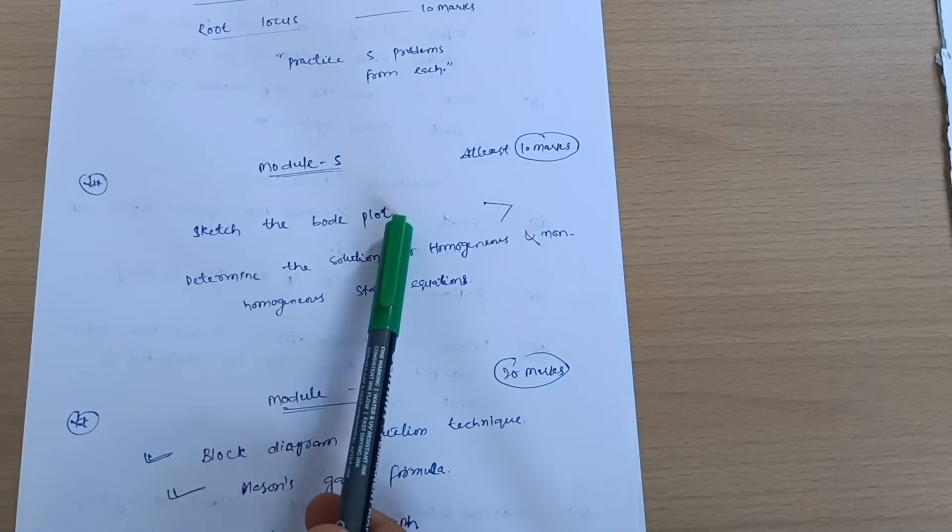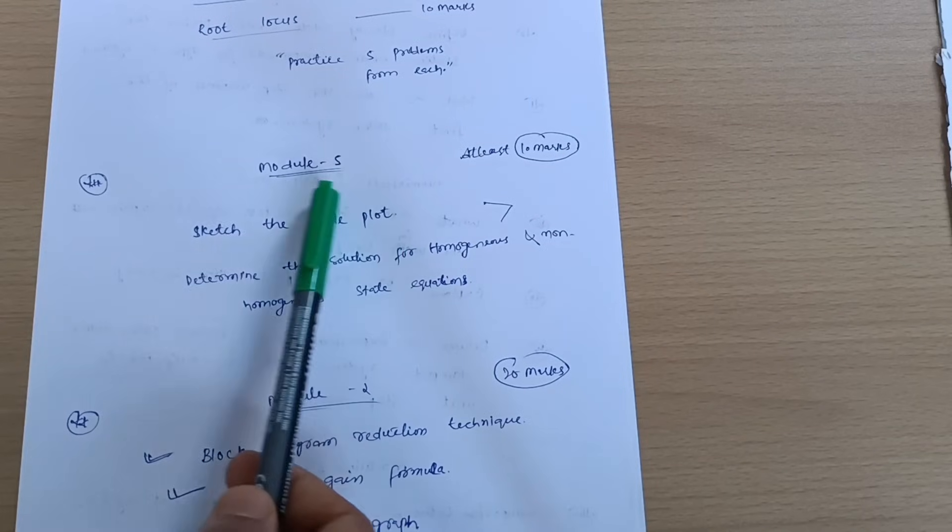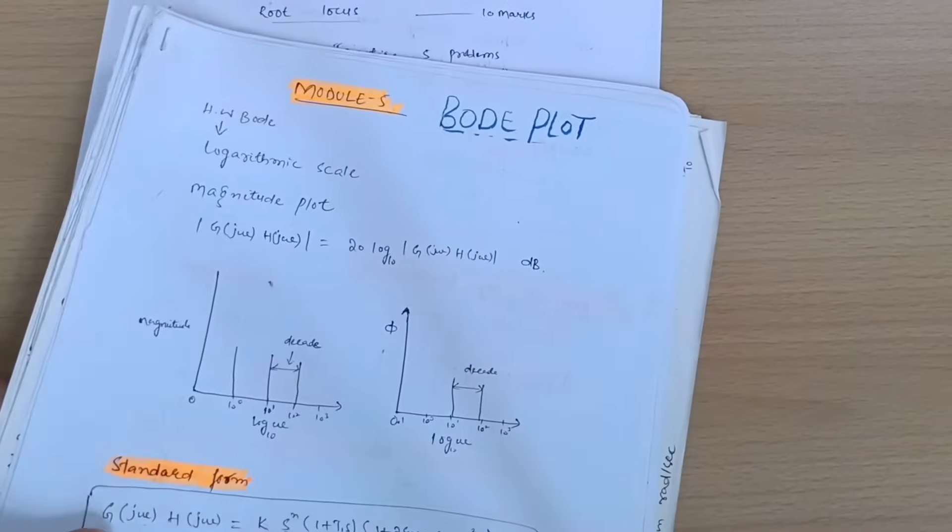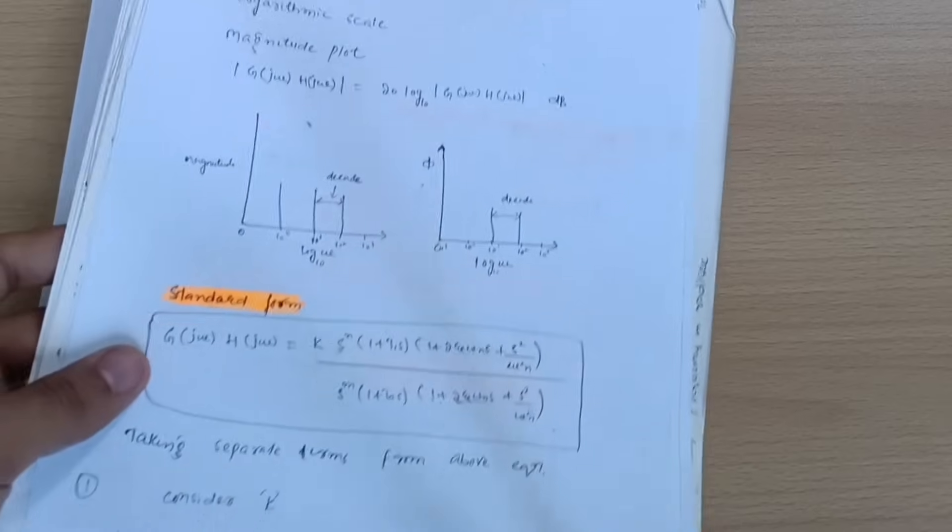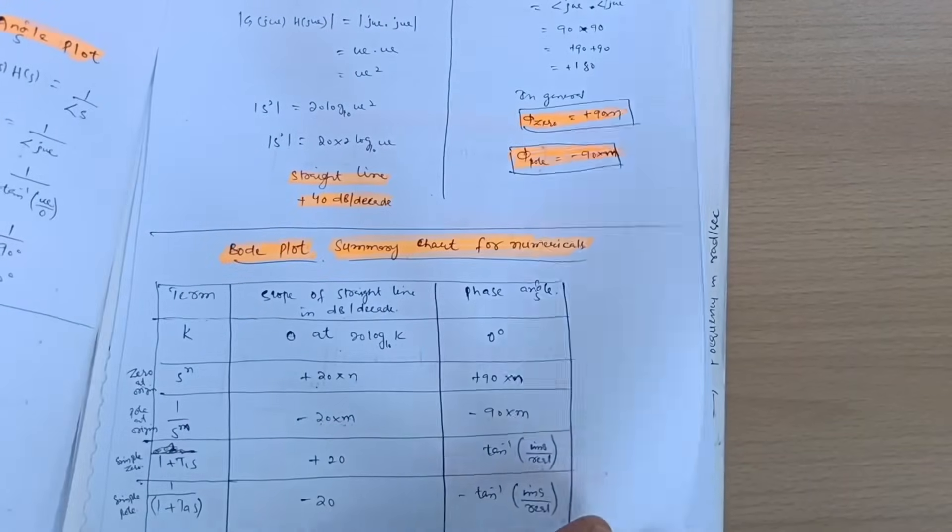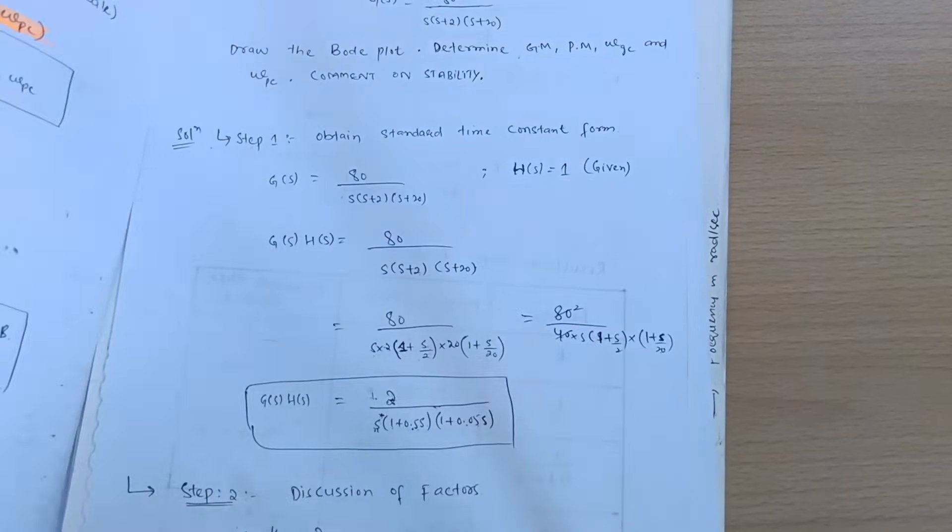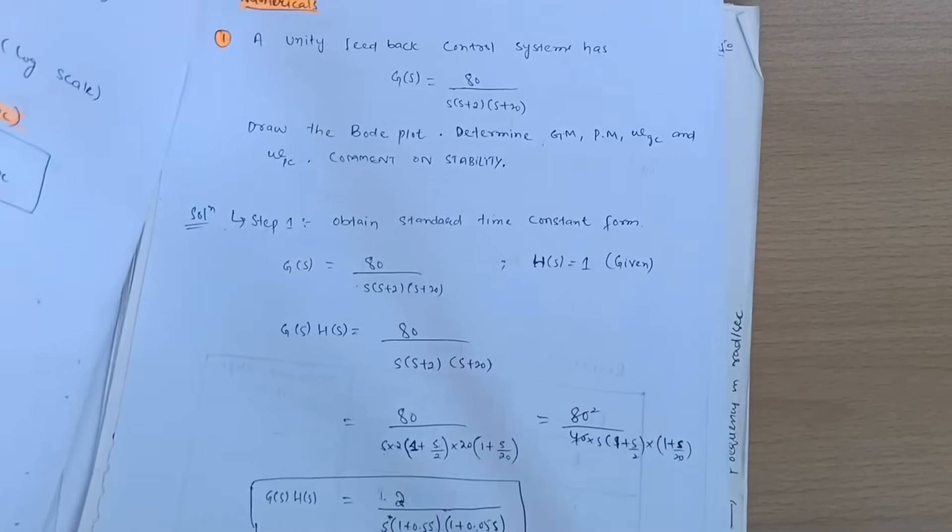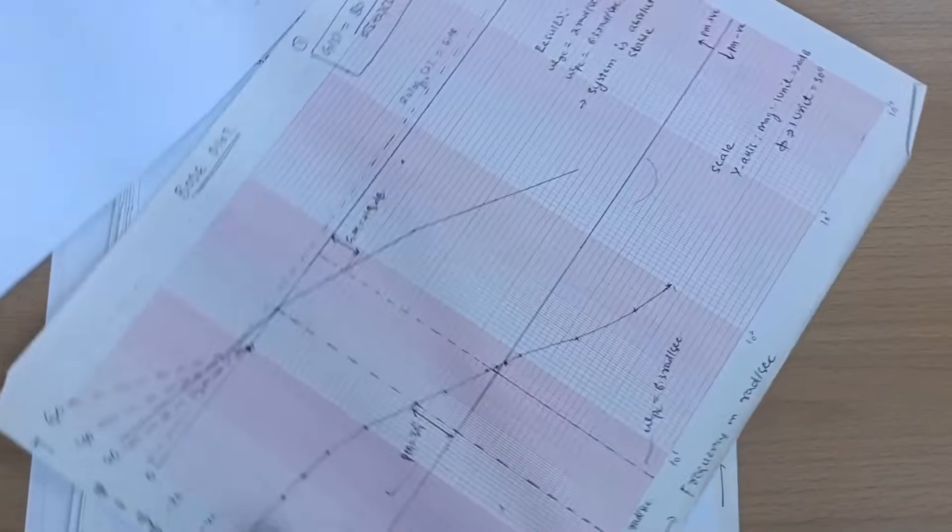So go through the Bode plot. At least you will get 10 marks. These are the Bode plot notes. This is the definition part. Rest of the thing is there are some numericals which I have solved and you should go through these problems whatever I have written in these particular notes stepwise. This is the final Bode plot graph which I have plotted here.